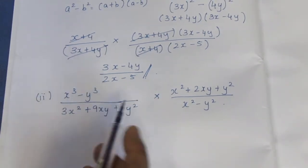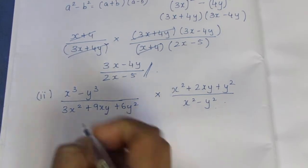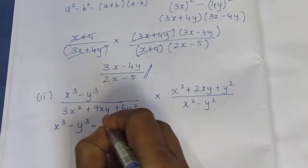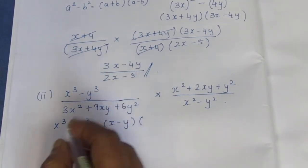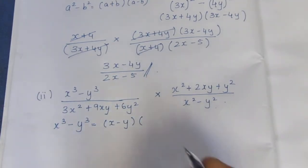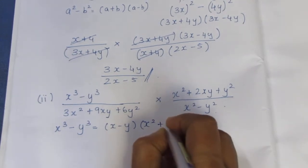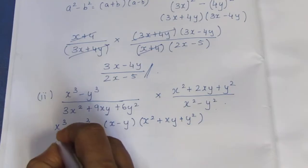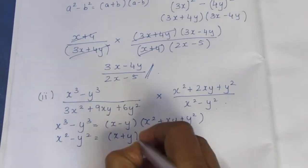For x square minus y square, we apply the a square minus b square formula. For x cube minus y cube, we use the formula (x minus y) into (x square plus xy plus y square). And x square minus y square equals (x plus y) into (x minus y).